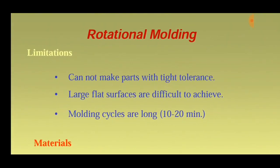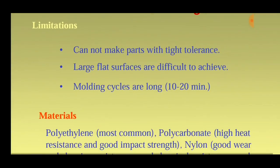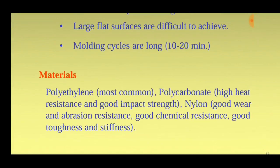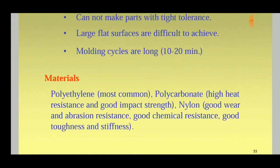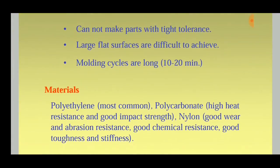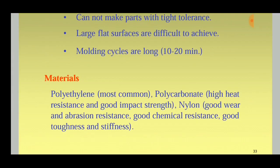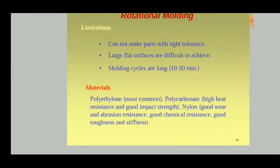The limitations of rotational molding are: it cannot make parts with tight tolerances, large flat surfaces are difficult to achieve, and molding cycles are long — 10 to 20 minutes. The materials used include polyethylene, polycarbonate, nylon, and similar plastics.